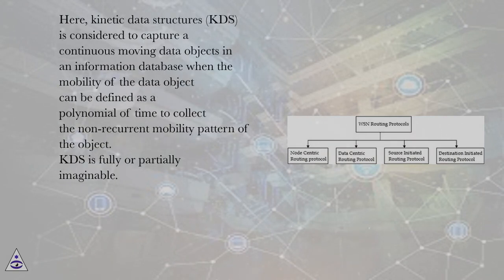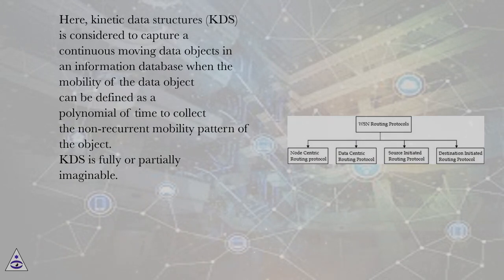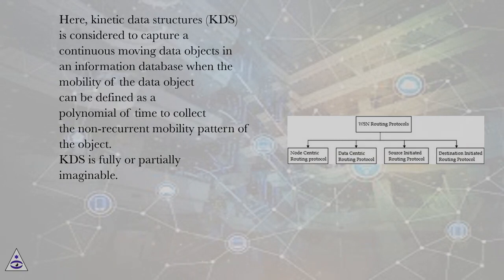Here, Kinetic Data Structures (KDS) is considered to capture continuous moving data objects in an information database when the mobility of the data object can be defined as a polynomial of time, to collect the non-recurrent mobility pattern of the object. KDS is fully or partially imaginable.